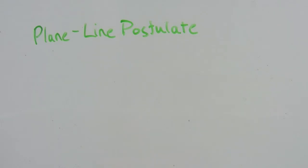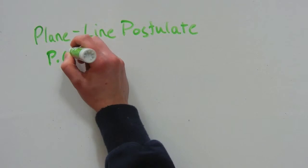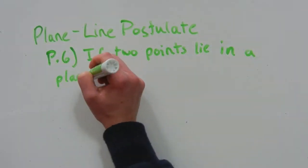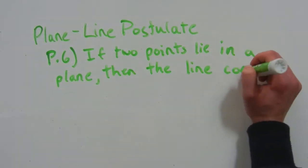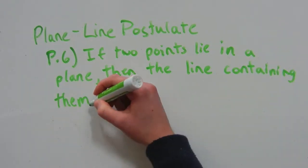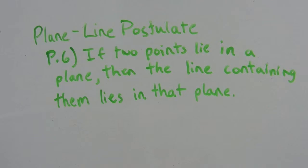The next postulate we're going over is the plane line postulate. This postulate states that if two points lie in a plane, then the line containing them lies in that same plane.